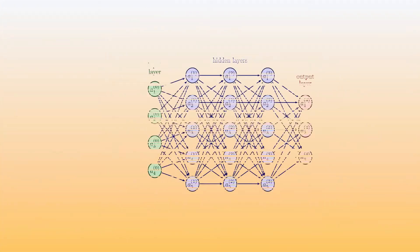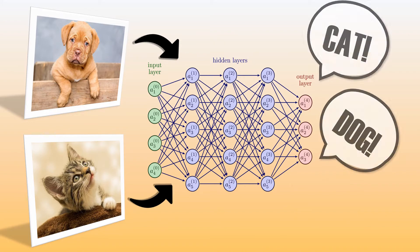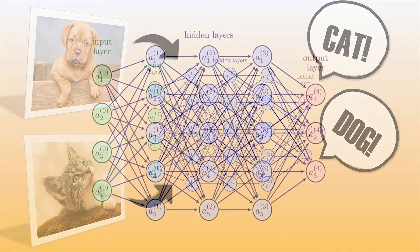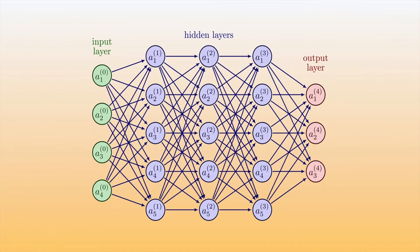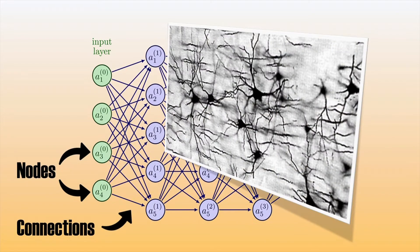Computational neural network models can do this too, and the way these models achieve this is not that much different from how it works in our brain. Computational neural networks consist of nodes and connections, which are reminiscent of neurons and synaptic connections in our brain.